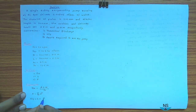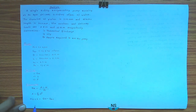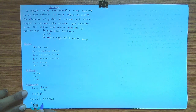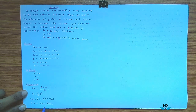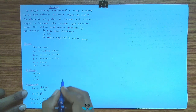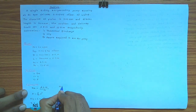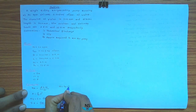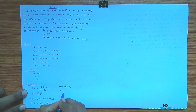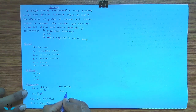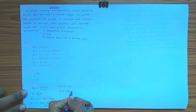Slip S is equal to Q_theoretical minus Q_actual. Percentage slip is equal to (Q_theoretical minus Q_actual) divided by Q_theoretical, into 100. Total head H is equal to suction head HS plus delivery head HD. Power required to run the pump P is equal to γ (gamma) into Q_theoretical into H.